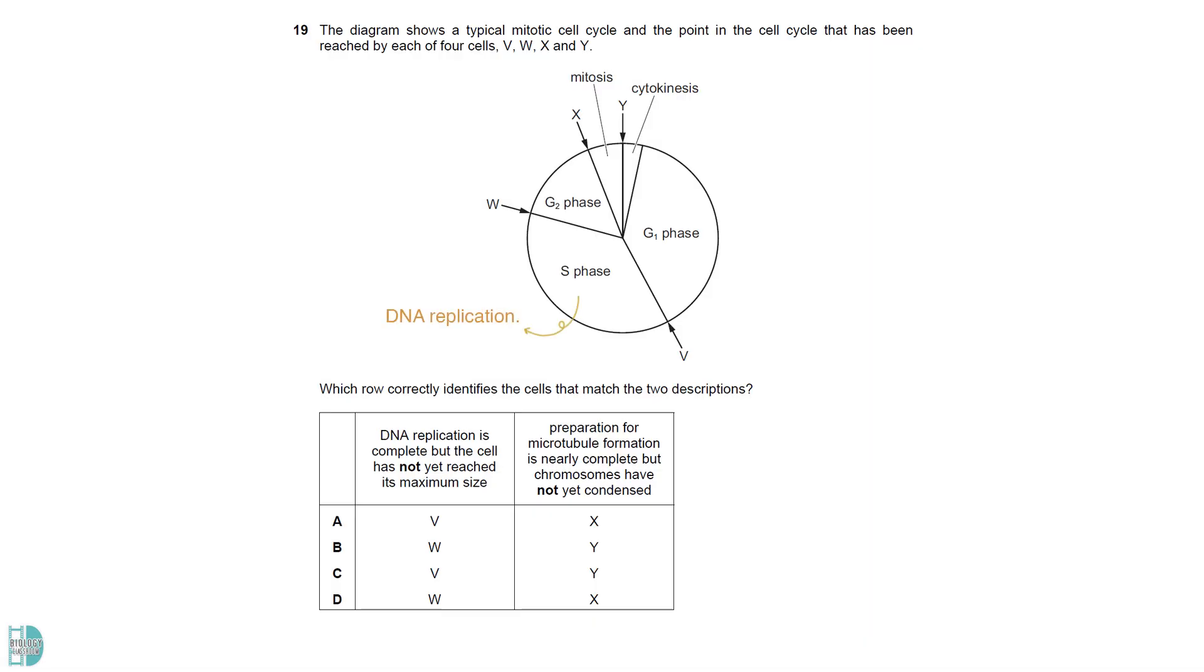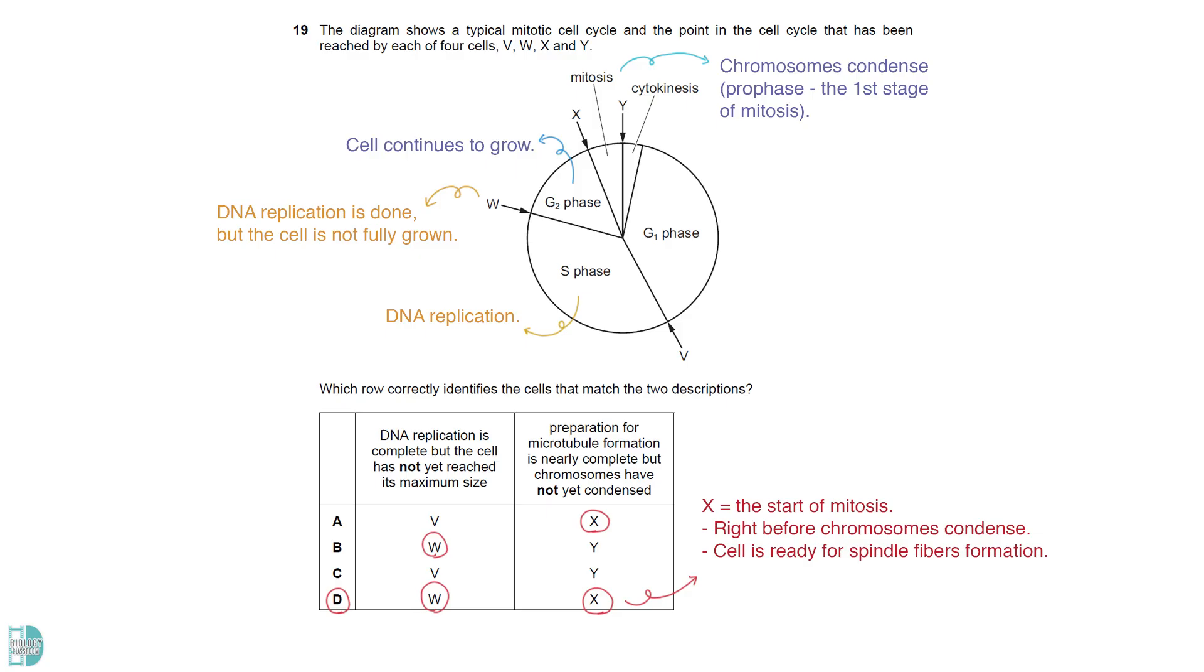DNA replication occurs in the S phase. The cell continues to grow in the G2 phase. So, W is when the cell has completed DNA replication but not yet reached its maximum size. Chromosomes condense during prophase, the first stage of mitosis. X is the start of mitosis, right before condensation of chromosomes take place. But the cell is ready to start forming the spindle fibers.